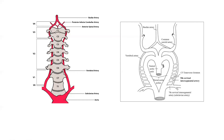To summarize: the dorsal ramus gives rise to a spinal branch. The 7th cervical intersegmental artery forms the first part of the vertebral artery; anastomosis of intersegmental dorsal rami forms the second part; the dorsal ramus of the first cervical intersegmental artery forms the third part; and the spinal branch of that dorsal ramus forms the fourth part.